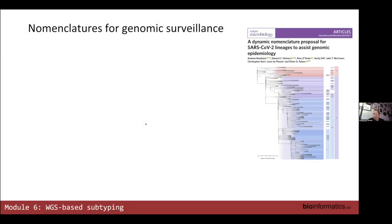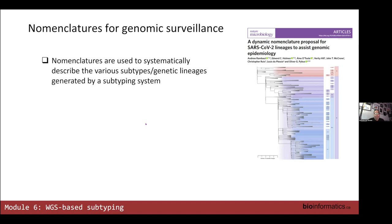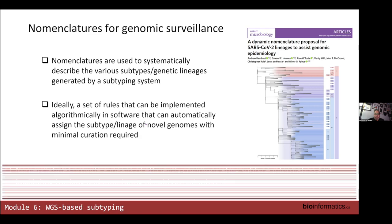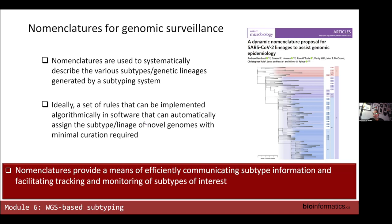I talked about nomenclatures. Prior to COVID, nomenclatures were kind of like one of those arcane little things that some people like myself were quite interested in, but not necessarily everybody. But certainly in the case of SARS-CoV-2, one of the major accomplishments was the development of a nomenclature for naming the various sequences, assigning them into clades, and doing it in an algorithmic fashion by implementing a number of different rules into a subtyping system.